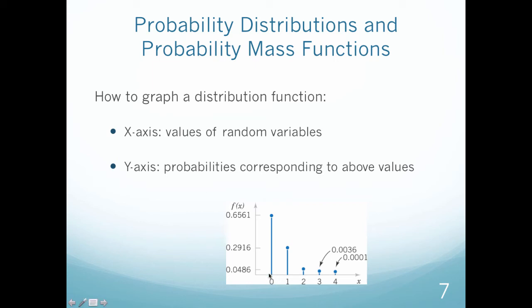The probability of getting a 0 in this event would then be up here at 0.6561. The probability of getting a 1 would be 0.2916, and so on. So I would have that corresponding probability over here. Basically, we're just graphing probabilities. It's no fancier than that. So just think, the y-axis is my probability, the x-axis is the possible x values.